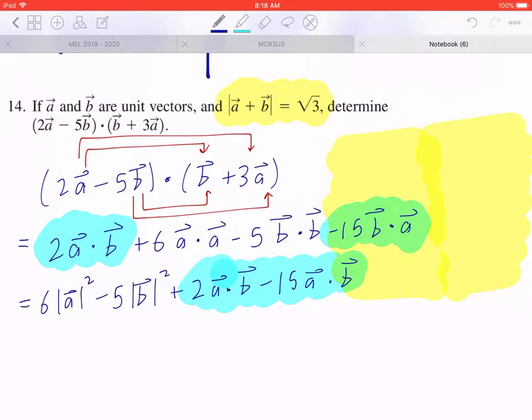Now you have to go back to the beginning, and it says that a and b are unit vectors. The fact that a and b are unit vectors means the magnitude is going to be 1, so this becomes 6 times 1 squared minus 5 times 1 squared.